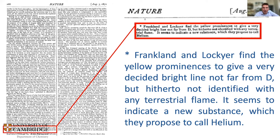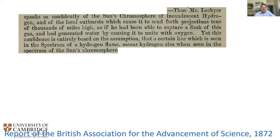The first announcement of helium appeared in Nature — actually in a footnote in a report from the British Association for the Advancement of Science. It states: 'Frankland and Lockyer find the yellow prominences to give a very decided bright line not far from the D line, hitherto not identified with any terrestrial flame. It seems to indicate a new substance which they propose to call He.' Helium doesn't appear clearly in print for some time after this.